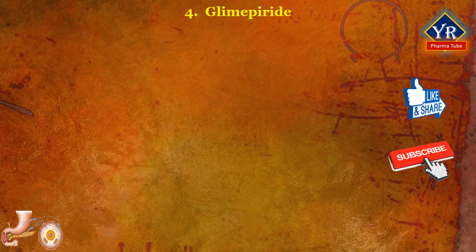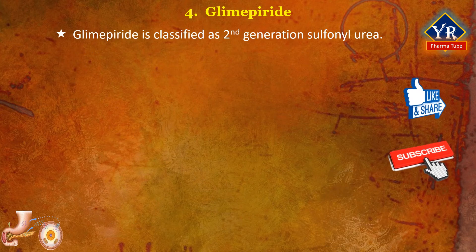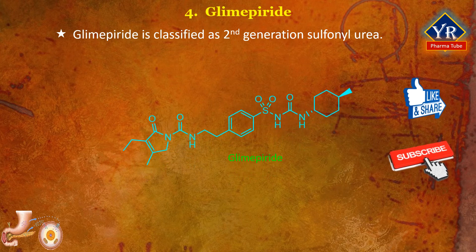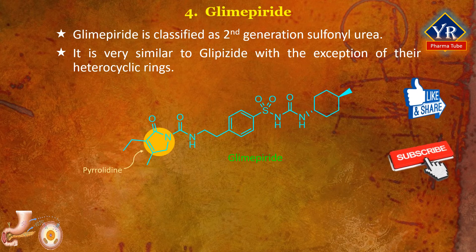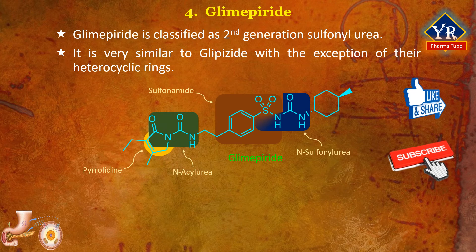The last drug is glimepiride. Glimepiride is classified as a second generation sulfonylurea used in the management of type 2 diabetes mellitus to improve glycemic control. It is very similar to glipizide with the exception of their heterocyclic rings. Instead of the pyrazine ring found in glipizide, glimepiride contains a pyrrolidine system. Thus, it is a sulfonamide, an N-acylurea, and an N-sulfonylurea.